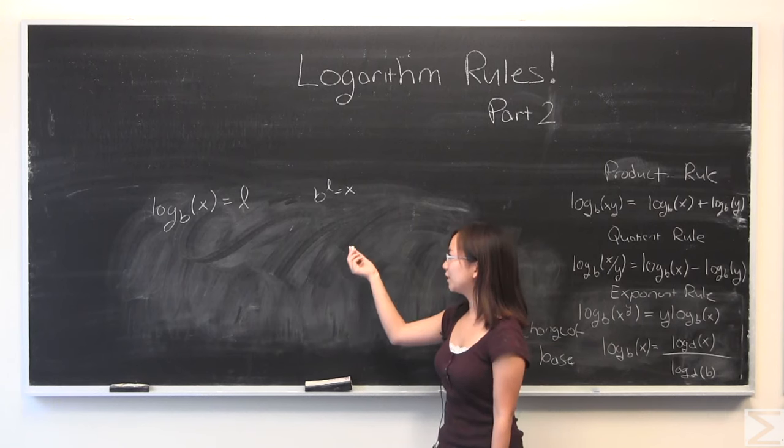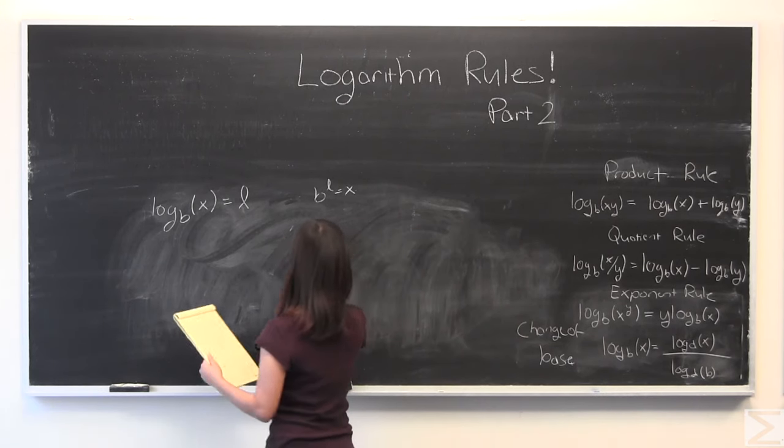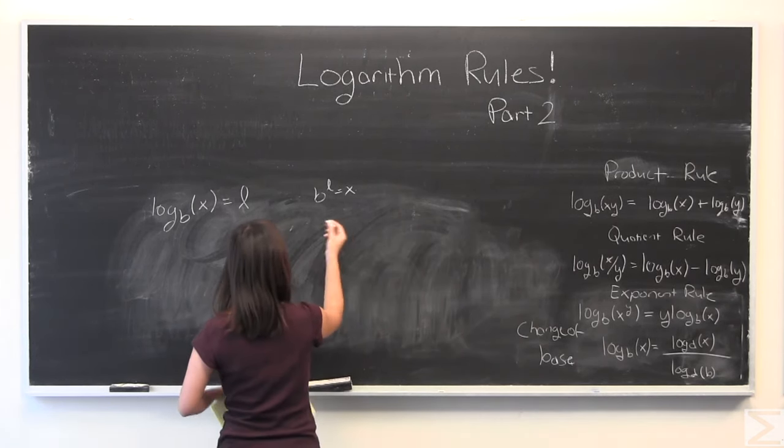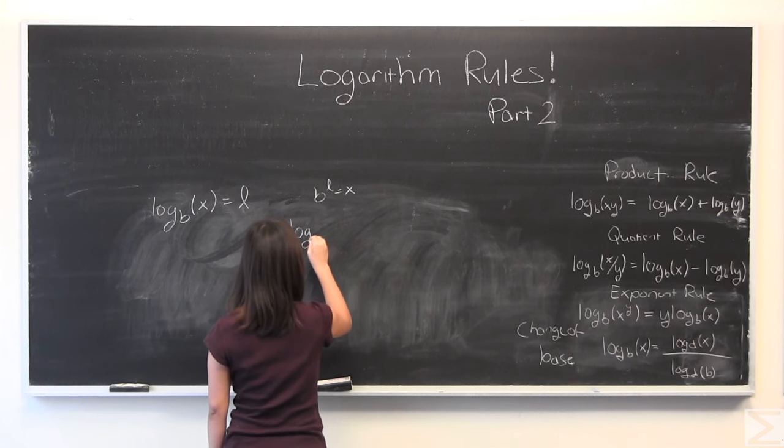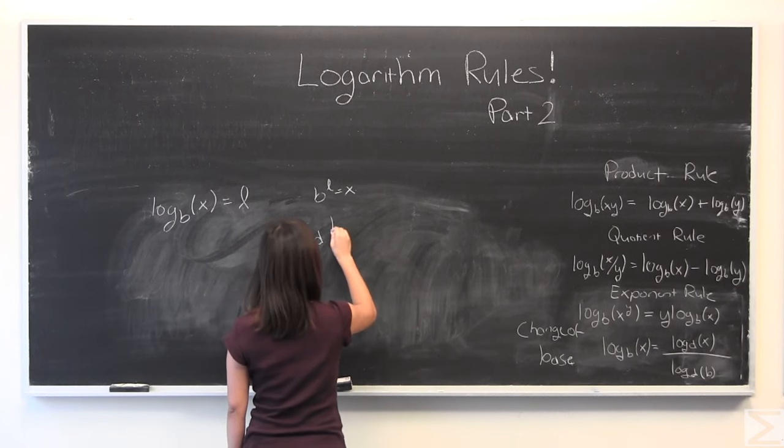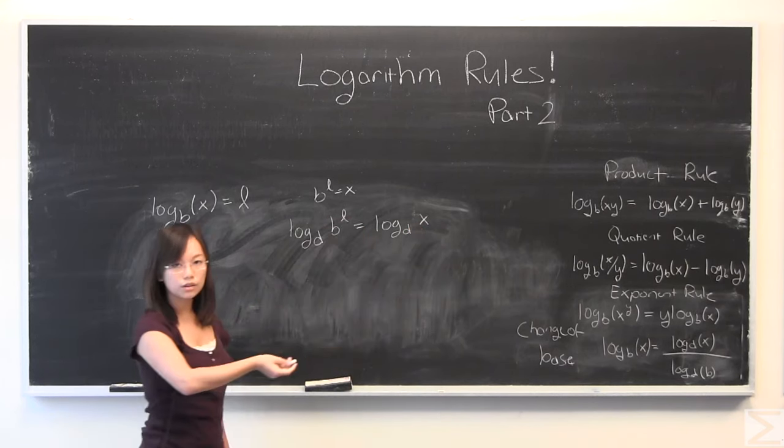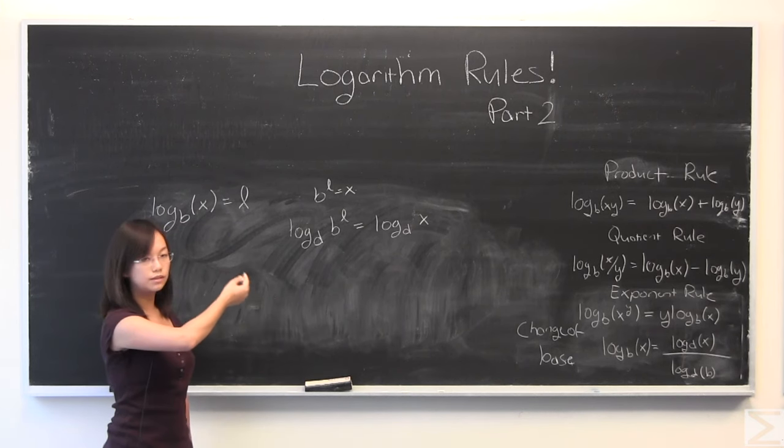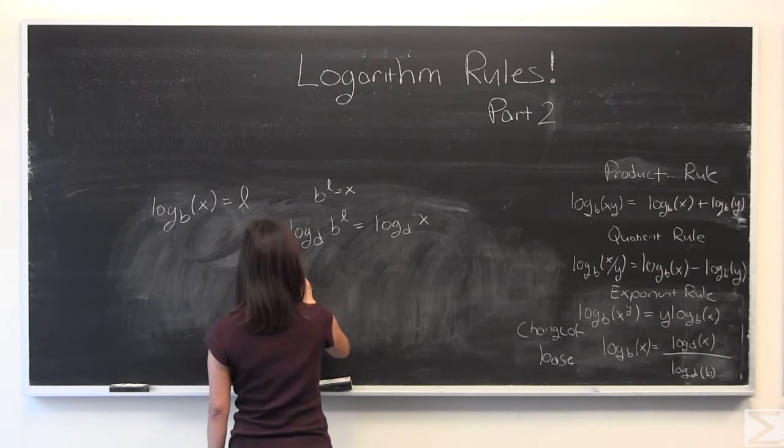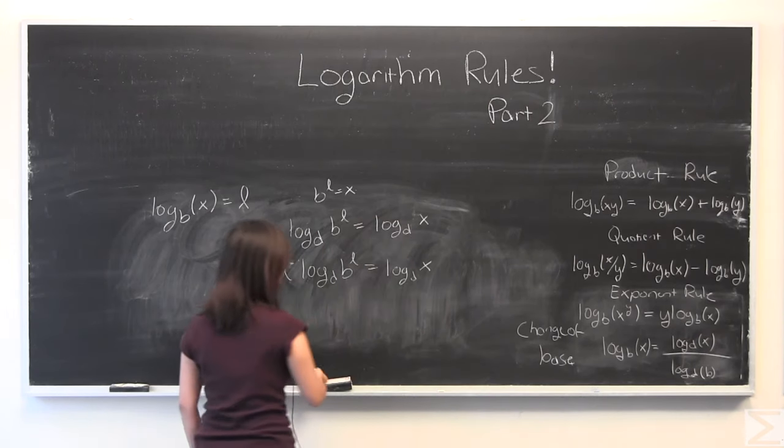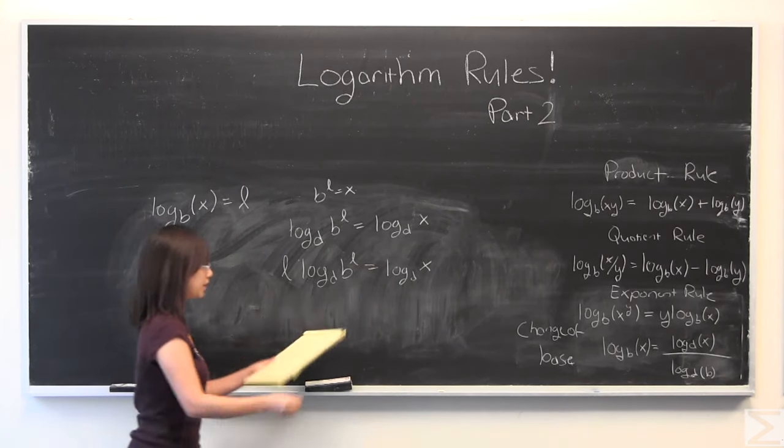So if you've been following me this entire time, you'll know that these are equivalent statements. I'm going to take some new log base. We're going to call it D. That can be your new base on both sides. I'm going to use the exponent rule that I just proved, and I'm going to take this L. I'm going to put it here. All right, I'm going to solve for L on both sides.